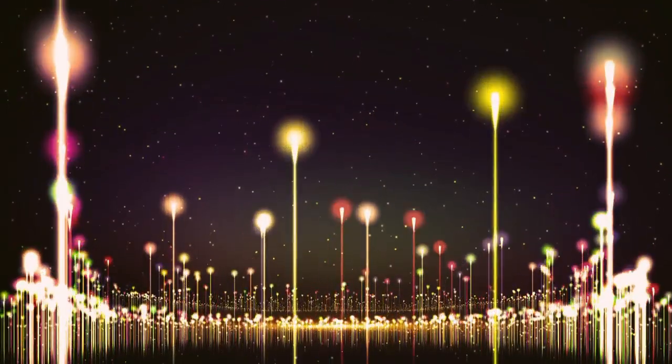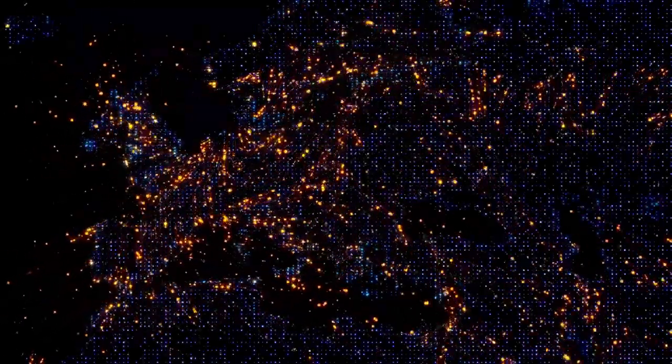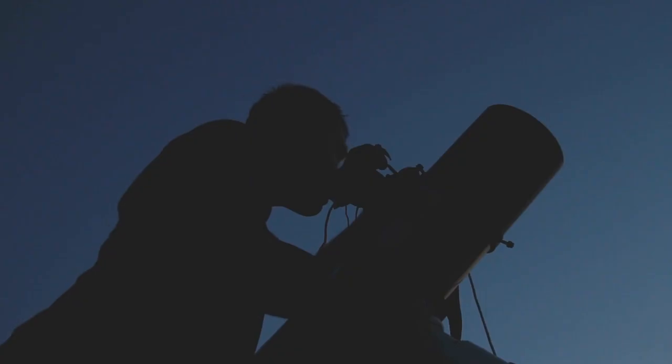Hycean worlds may also represent a sweet spot in the search for extraterrestrial life. Because of their large size and relatively frequent occurrence in the galaxy, they are easier to detect than Earth-sized planets. Their extended habitable zones, made possible by heat-trapping hydrogen atmospheres, means that they may be far more numerous than previously assumed. In fact, some astronomers believe Hycean planets could be among the most common types of habitable worlds in our galaxy.